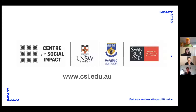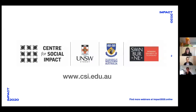CSI is a national research and education center. We operate out of three partner universities: Swinburne, the University of Western Australia, and UNSW in Sydney. We produce research that catalyzes social change and we're the leading provider of undergraduate courses and postgraduate programs in social impact. More than that, we aim to build capacity in the social purpose sector and bring people together to create social change. You can find out more at csi.edu.au.